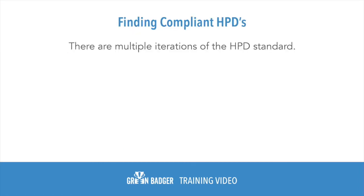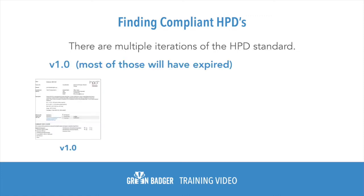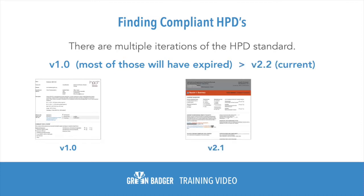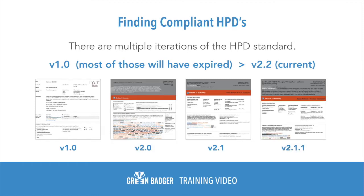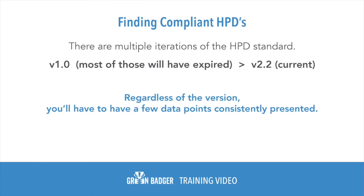The first thing you may notice is that there are multiple iterations of the HPD standard. The first is HPD version 1.0, though most of those, if not all, will be expired by now. It is currently on version 2.2. There's also a 2.1, a 2.0, and a 2.1.1. Regardless of the version, you'll have to have a few data points consistently presented.